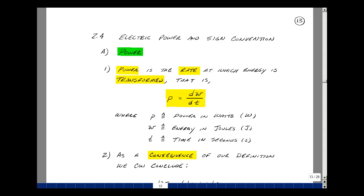This lesson deals with electric power and the passive sign convention. Let's define power. Power is the rate at which energy is transformed. We express this mathematically as the change in energy per change in time. If the change is small enough, you have a derivative. Power is in watts, energy is in joules, and time is in seconds.